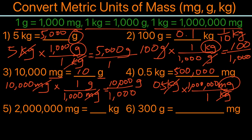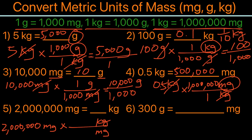For the fifth example, we have 2,000,000 milligrams converting to kilograms. Milligram goes on the bottom and kilogram on top, using 1 kilogram equals 1,000,000 milligrams. Milligram cancels out, and 2,000,000 divided by 1,000,000 gives us 2 kilograms.